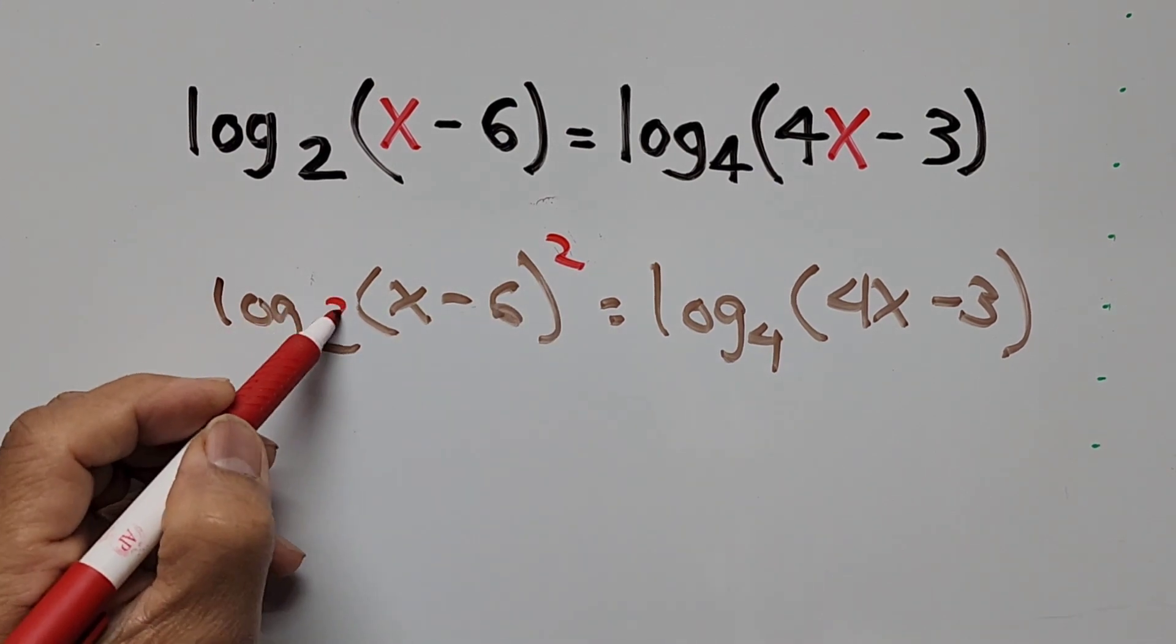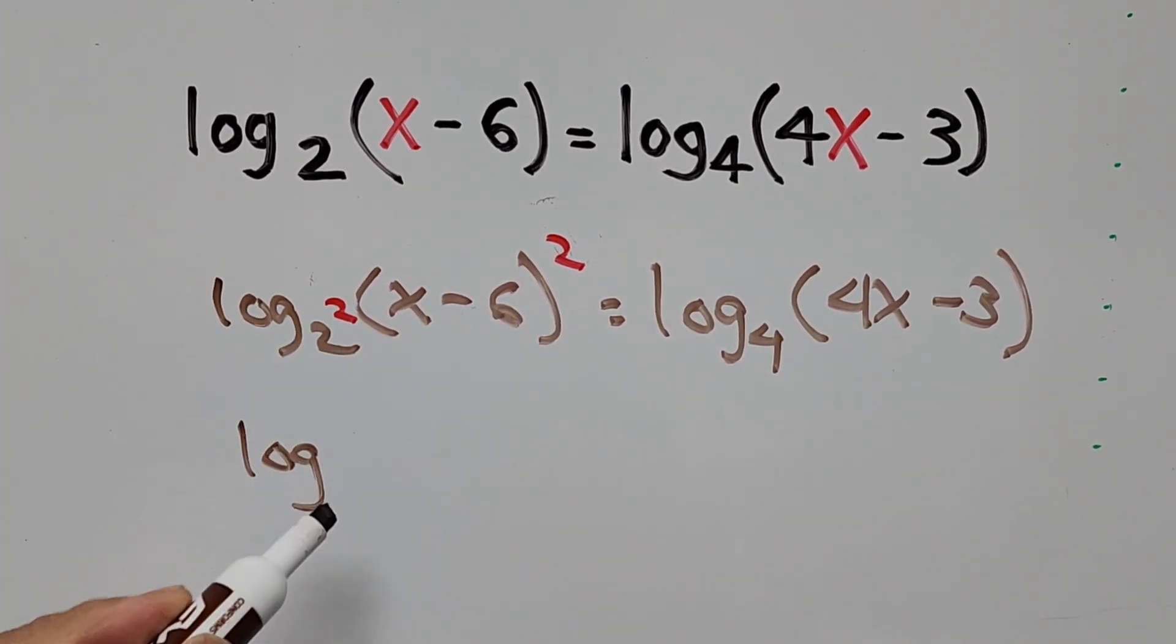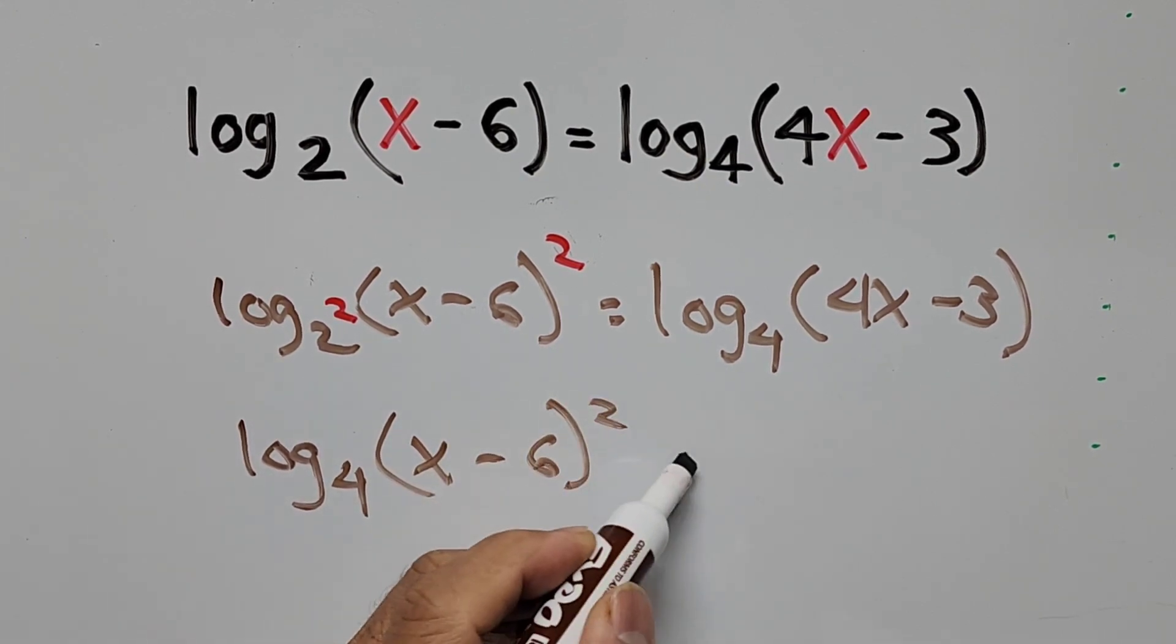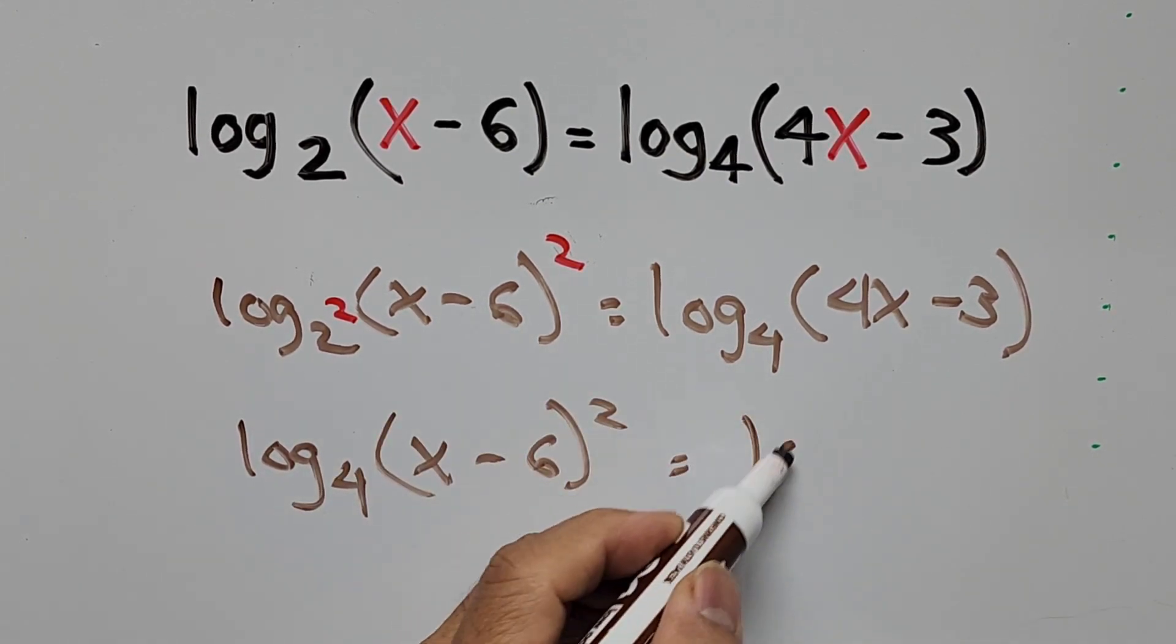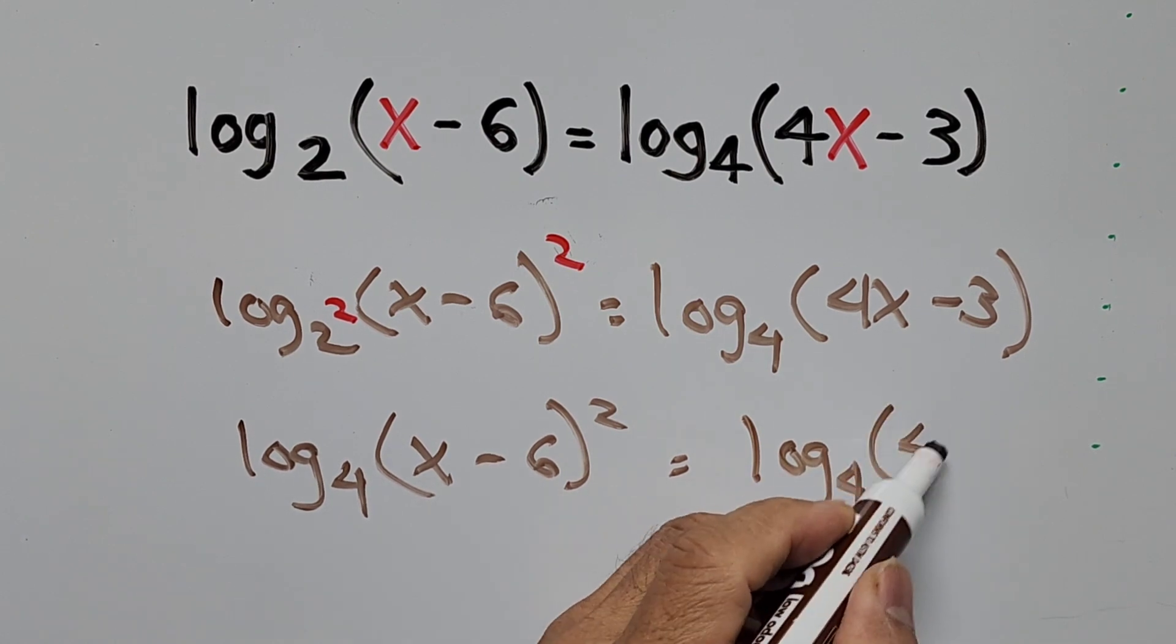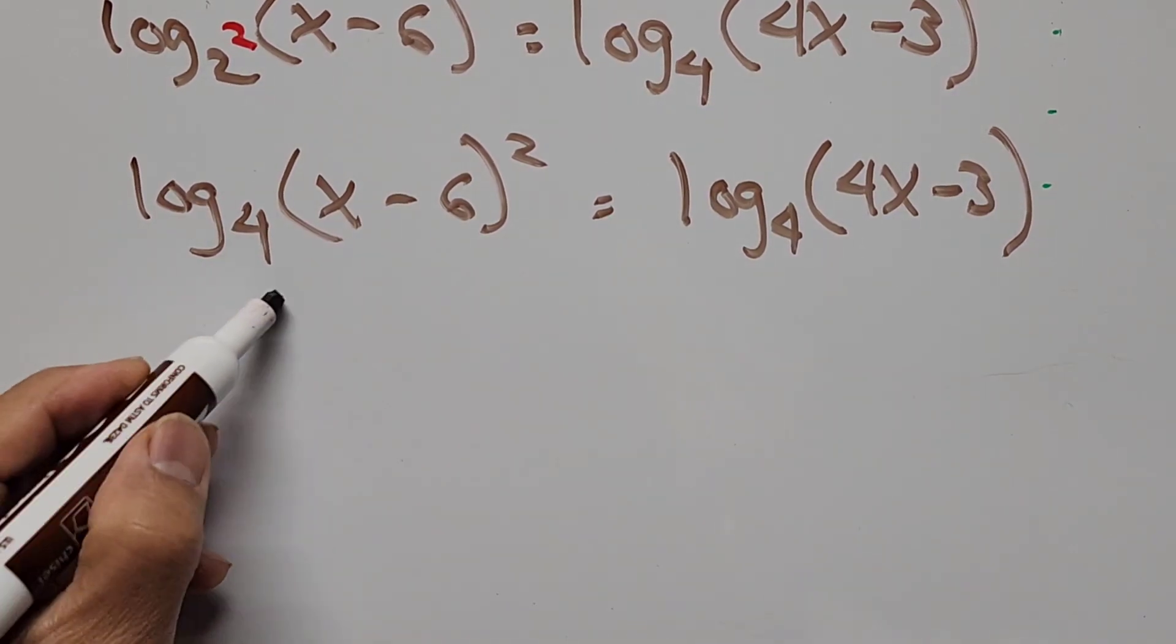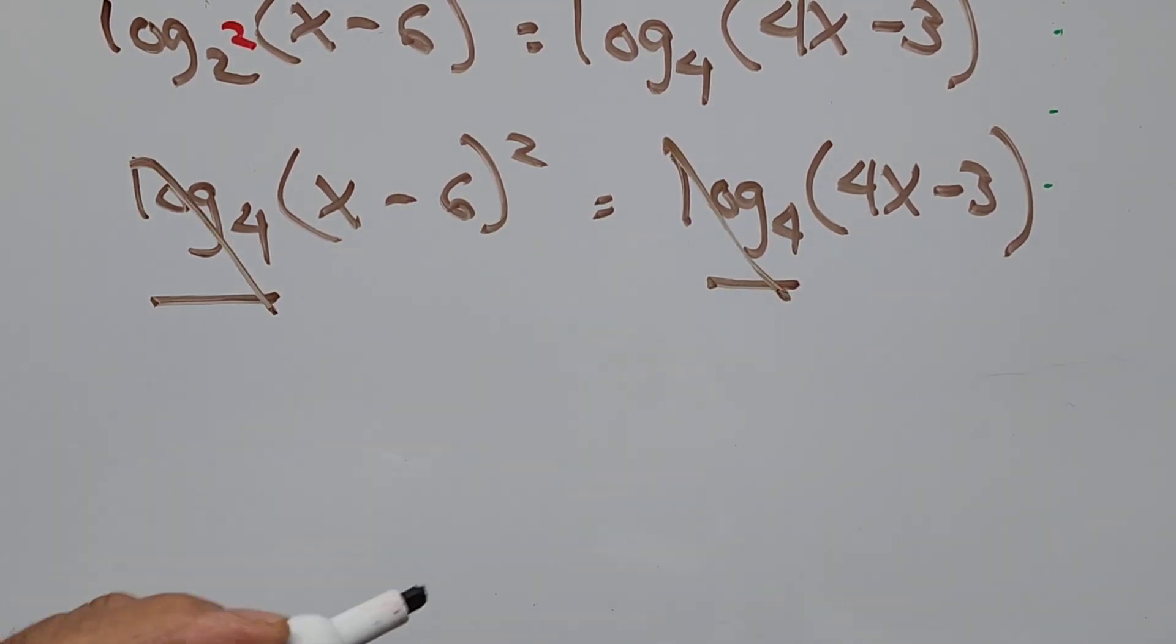We're going to square the left hand side so we have log base 4 of (x - 6) squared. The right hand side remains the same, so we have now log base 4. I cancel that, so we end up with (x - 6) squared equals 4x - 3.